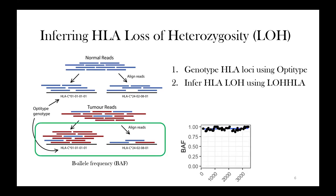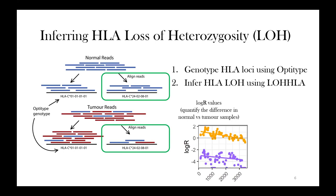If I compare the number of reads that align to both alleles of the same gene in the tumor, I can calculate a B-allele frequency. If one of the two alleles is lost, as shown here, I will get a B-allele frequency closer to zero or one, and I can identify this as a loss. If the allele is intact, I expect the same number of reads from both alleles, so the B-allele frequency would be around 0.5. I can also compare reads between tumor and normal using a log R value — if this is around zero, the copy numbers are the same; if negative, it's indicative of a loss in the tumor.